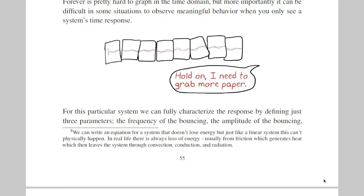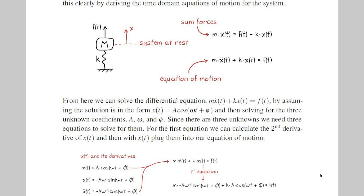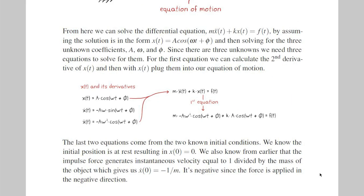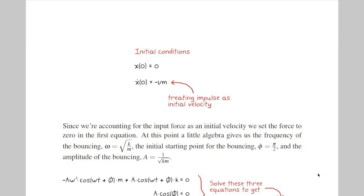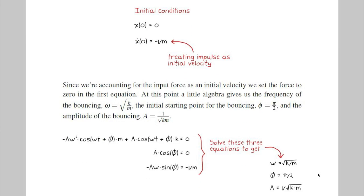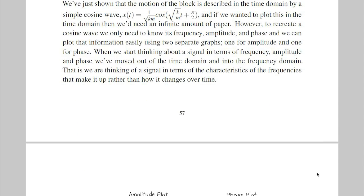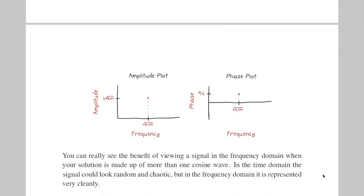However, if you write the differential equation for that system and then solve for the solution, you would find that it's in the form of a pure cosine wave, which could be described by three parameters: the frequency of the wave, the amplitude of the wave, and the phase shift. And we could easily plot that information on two separate graphs. And once you start thinking of a signal in terms of the characteristics of the frequencies that make it up, then you're thinking about it in the frequency domain.